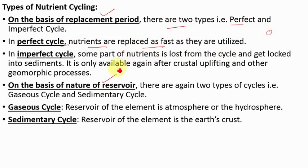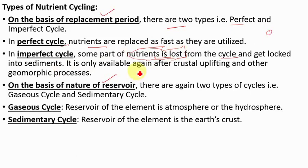In the imperfect cycle, some of the nutrients are lost from the cycle and get lodged into sediments. In a previous slide I said there is no loss of nutrients, but here the meaning is that nutrients are lost only for a temporary period — not permanently. They are deposited in sediments and will again be available because the sediments will come back to the surface through crustal upliftment or other geomorphic processes.